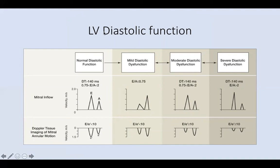Let us describe the phases of LV diastolic dysfunction. Normal: E is bigger than A. Mild diastolic dysfunction: E is shorter than A. Moderate diastolic dysfunction shows what is called pseudonormalization, where E again appears higher than A. To differentiate normal from pseudonormalization, use E over E prime. In normal and mild diastolic dysfunction, E/E prime is less than 10. In moderate diastolic dysfunction, it will be more than 10. Severe diastolic dysfunction is also more than 10.